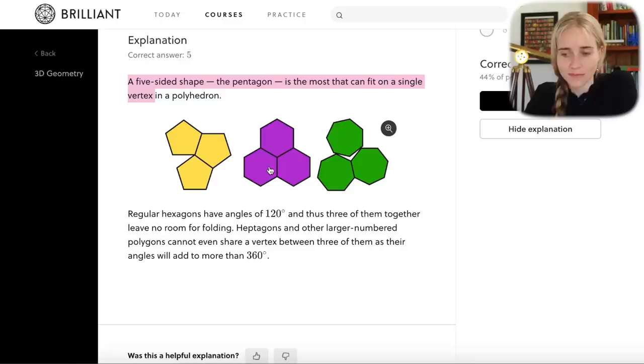If you look at the picture, that leaves a little bit of room to be able to fold it up. But with the hexagons, they fit together perfectly, leaving no room to be able to fold them. And with the heptagons, which is seven sides, or anything with more sides than that, can't share a vertex, because their angles will add to more than 360 degrees. And you can see you've got that little gap left in there that can't be filled.